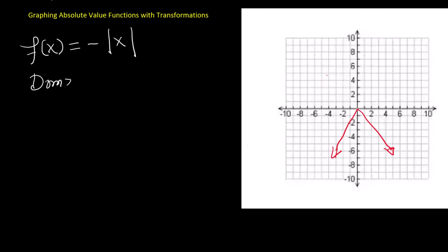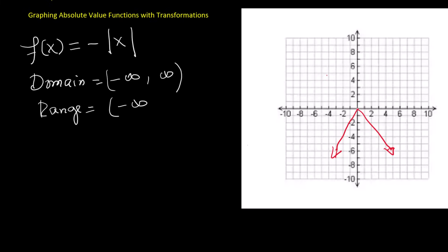The domain is all real numbers, written in interval form as open parentheses negative infinity comma positive infinity close parentheses. The range is all values less than or equal to 0, since the graph points downward, written in interval form as open parentheses negative infinity comma 0 with a closed bracket.